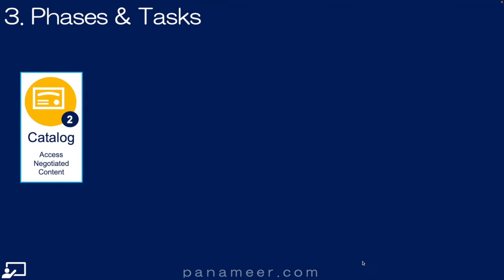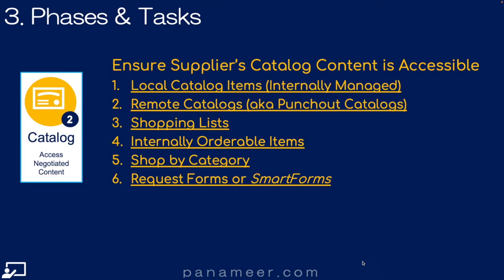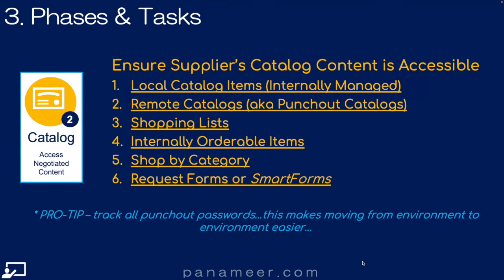Step 2: The Catalog step. The goal is to ensure the supplier's catalog content is accessible from Oracle Cloud. Here are the major tasks. Pro tip: remember to track all punch-out passwords in both test and production environments, and store them in a secure spreadsheet.